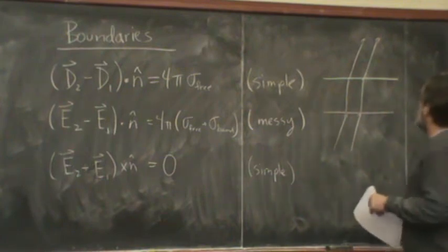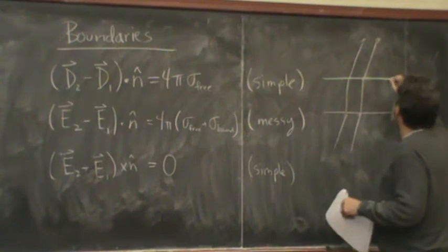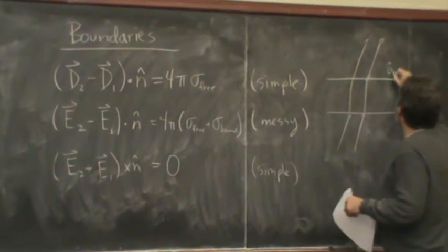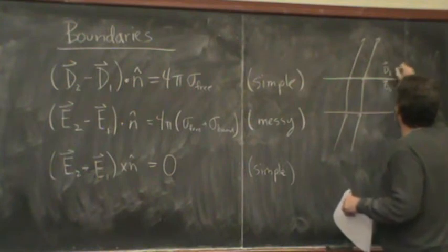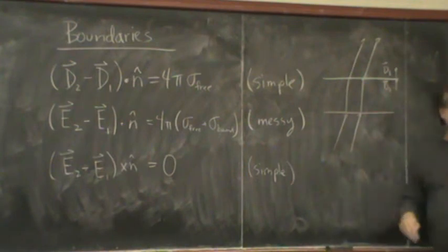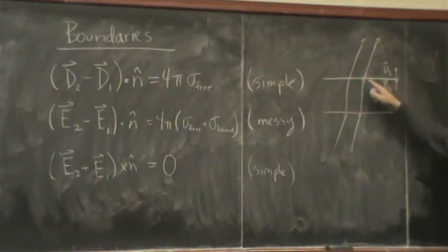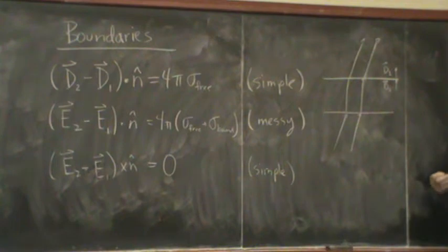But here's what I know. That the D field that's perpendicular to the surface is going to be continuous. Because in this problem where I have a material and I put it in an electric field, the material is not charged. It's a neutral material. I only have bound charge. So the D field is continuous across the surface.